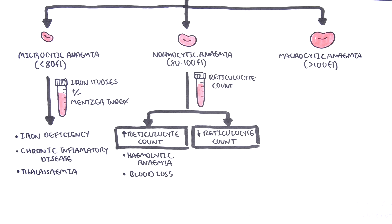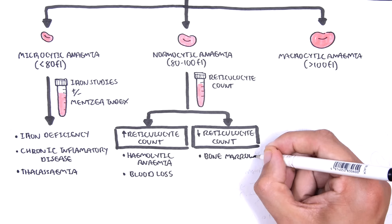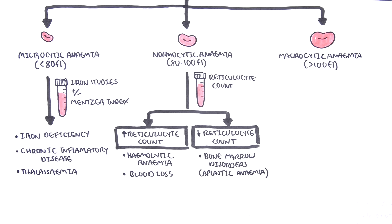If the reticulocyte counts are low, this could signify a bone marrow disorder such as aplastic anemia, because the bone marrow is unable to produce adequate amounts of red blood cells.